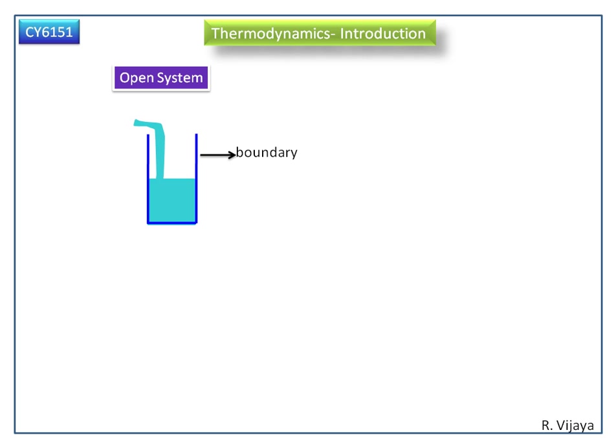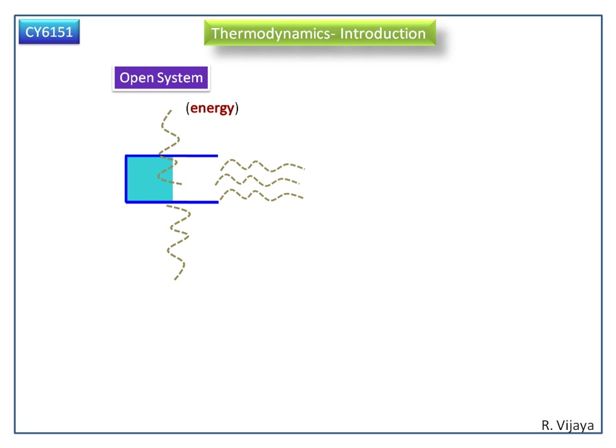This is called system. A system is separated from its surrounding by boundary. Now we can see how the energy is transferred to the surrounding and matter is transferred to the surrounding. So an open system can exchange both